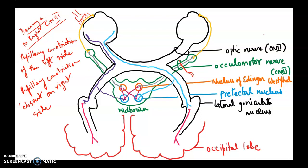The fourth situation: shining light on the left eyeball with the right oculomotor nerve damaged — we expect pupillary constriction on the left side but no pupillary constriction on the right side. That concludes my lecture on pupillary light reflex. This is a little complex; if you have any questions, feel free to reach out. Thank you.